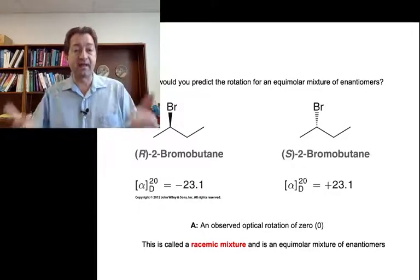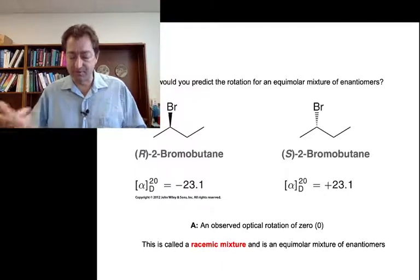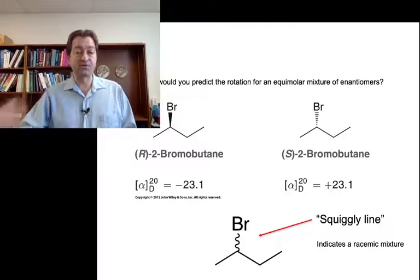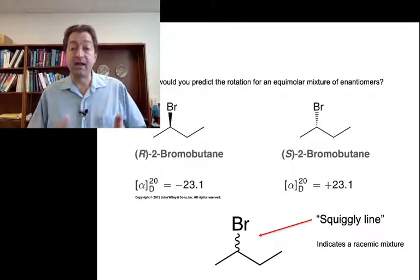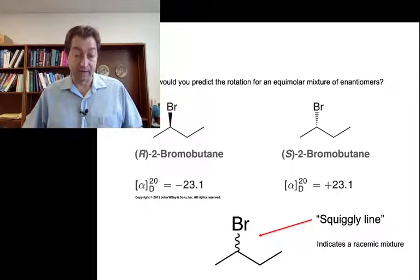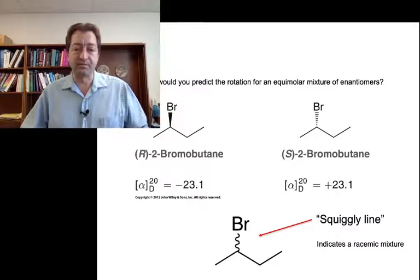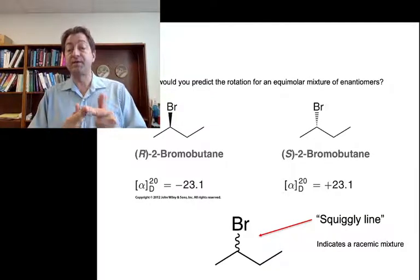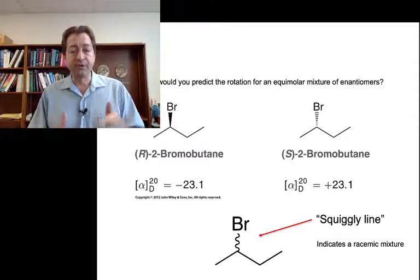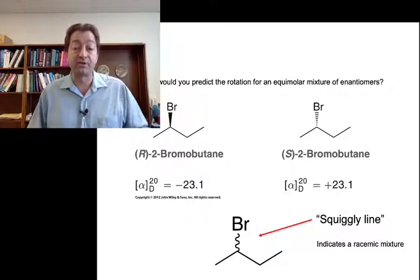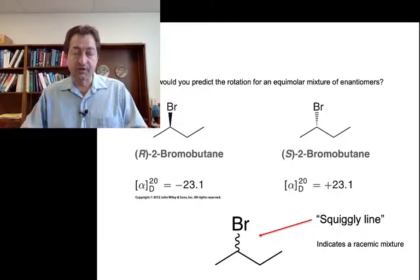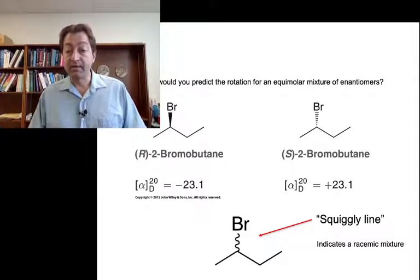We need a way of representing a racemic mixture in a drawing. Drawing both enantiomers in equal mixture is a headache, so we've got a very scientific term for the symbol we use — we call it a squiggly line. When we draw the bond with a squiggly line, it indicates we've got an equimolar mixture of both enantiomers present. We'll use this squiggly line representation a lot when we get to Chapter 7 material and start looking at substitutions and eliminations, because we'll be interested in the stereochemical outcome of our reactions.